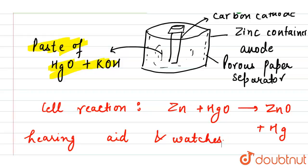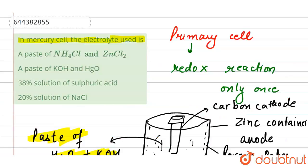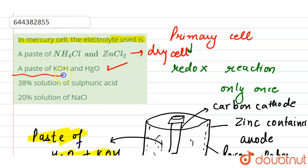Our answer is option number two — the paste of HgO and KOH. Option one is used in the dry cell, but here we have been asked about the mercury cell, so our answer is this one. Thank you.